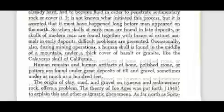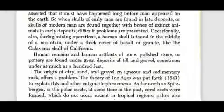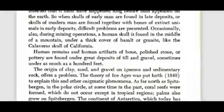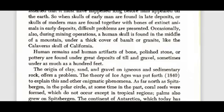The theory of ice ages was put forth to explain this and other enigmatic phenomena. As far north as Spitsbergen in the polar circle, at some time in the past coral reefs were formed, which do not occur except in tropical regions. Palms also grew on Spitsbergen. The continent of Antarctica, which today has not a single tree on it, must have been covered at one time by forests, since it has coal deposits.